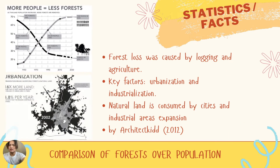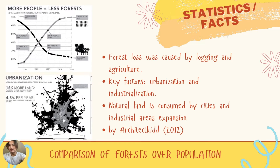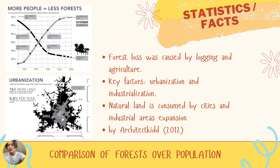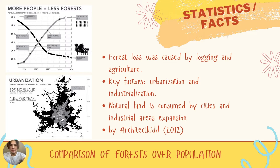These are the statistics and facts that we have found. Forest loss was caused by logging and agriculture. Key vectors include urbanization and industrialization. Natural land is consumed by city and industrial area expansion.